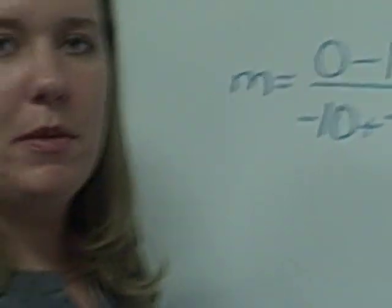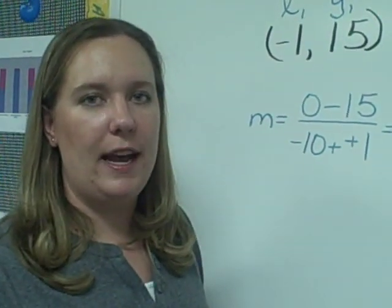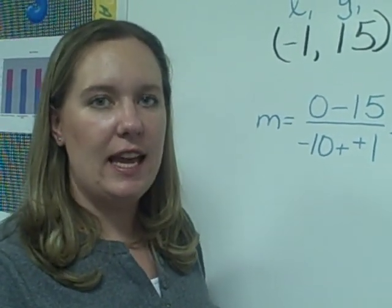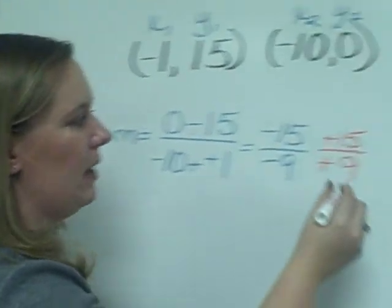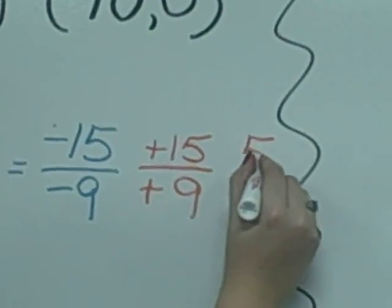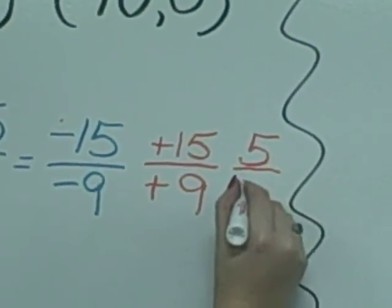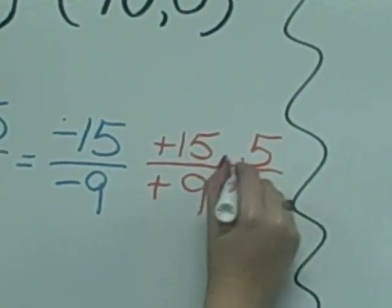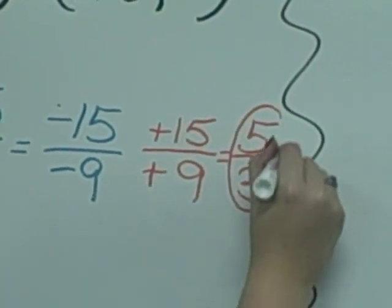And then from there, we still need to reduce our fraction. 3 goes into both 15 and 9. 15 divided by 3 is 5, and 9 divided by 3 is 3. So the slope of the line between these two points would be 5 thirds.